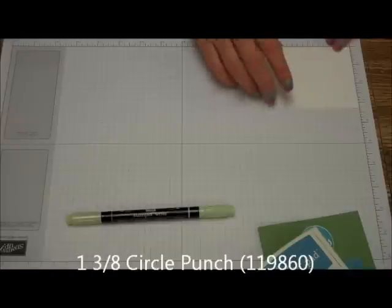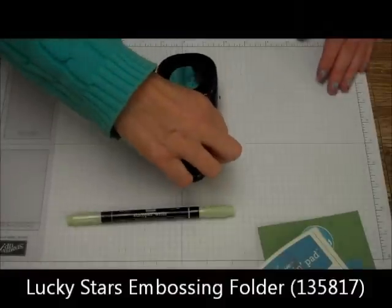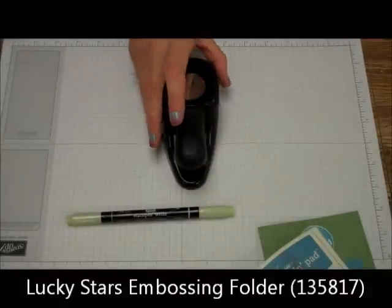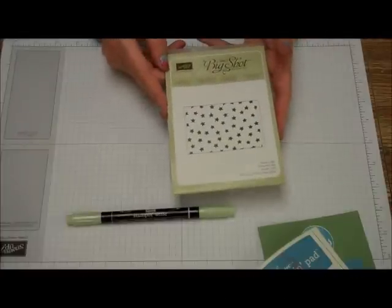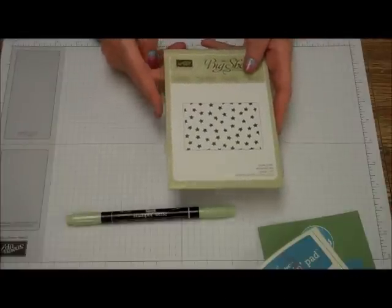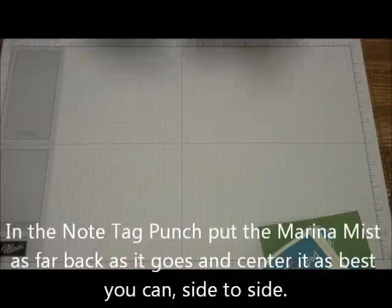Whisper white three and a quarter by three and a quarter and a piece of scrap. We're going to need besides the note tag punch, a one and three eighth inch circle punch. I'm going to be using the lucky stars embossing folder along with the big shot.